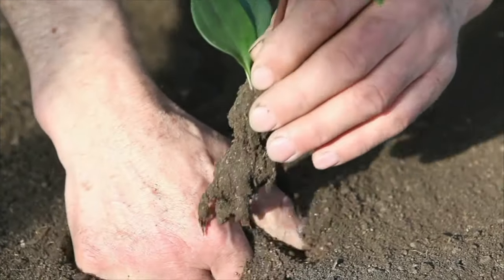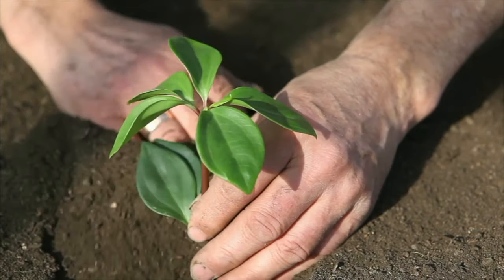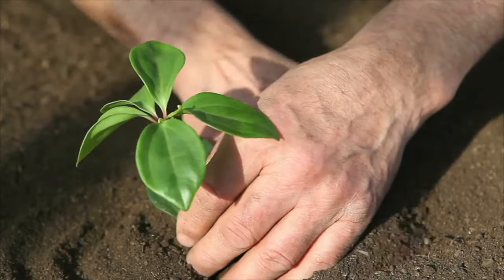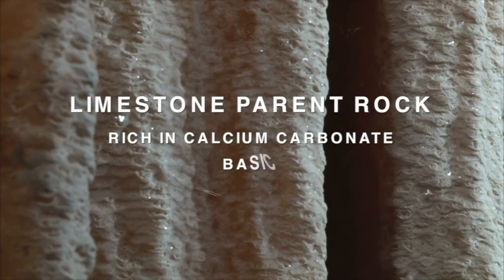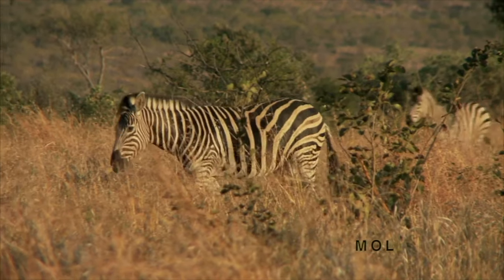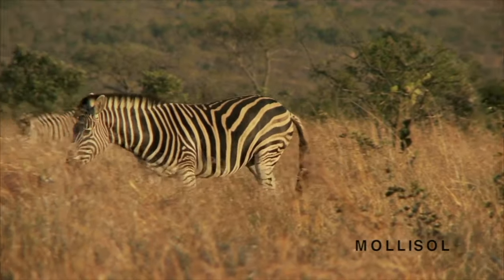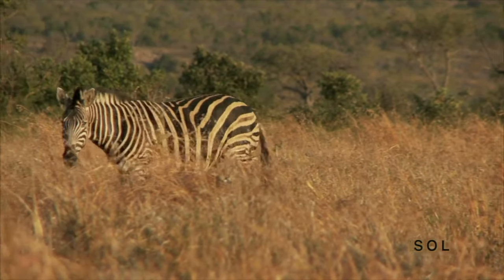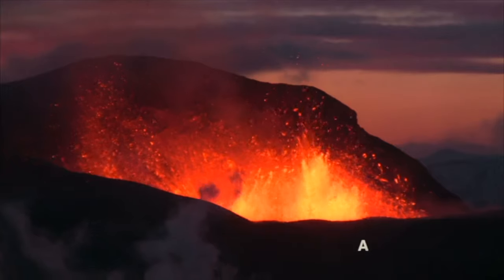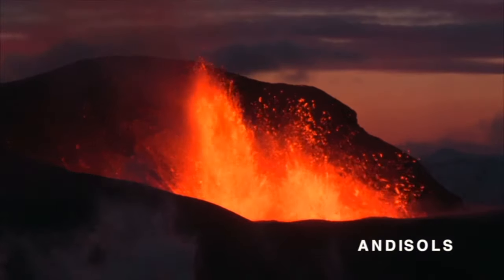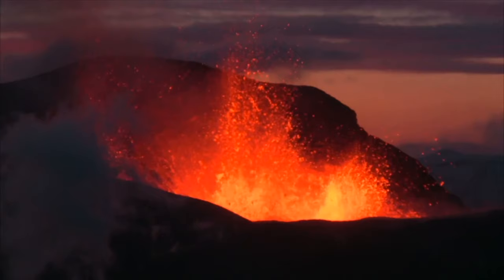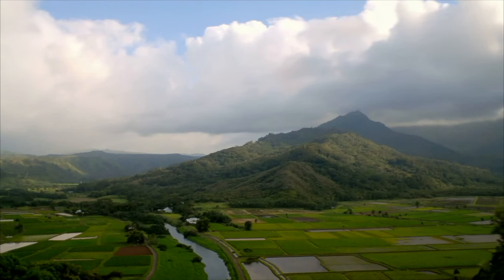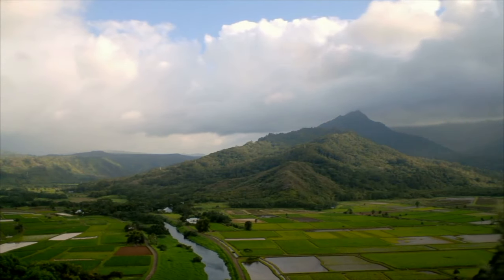The parent material determines the chemical composition, properties, and nutrient content of soils. For example, soil formed from a parent rock of limestone will be rich in calcium carbonate, be basic, and have a high pH. Mollisols are created from limestone and commonly support grassland environments, such as savanna ecosystems. Soils created from the parent rock of volcanic eruptions are called andisols. Volcanic ash contains all the minerals plants need to grow, so andisols are typically some of the most fertile soils on the planet.